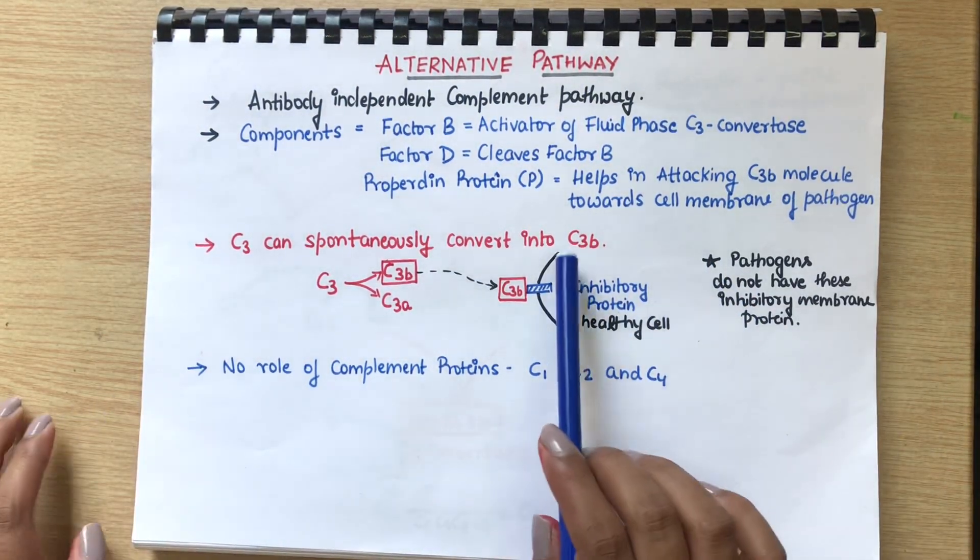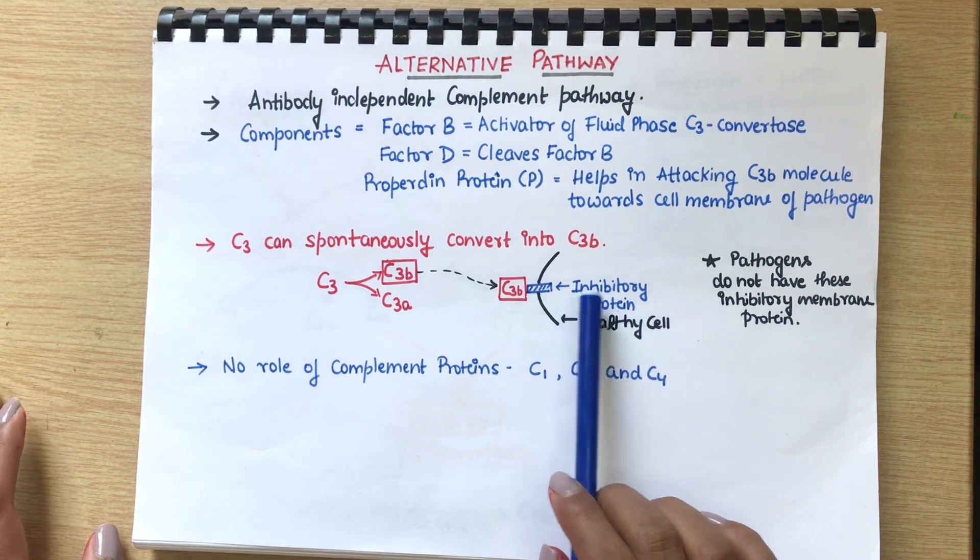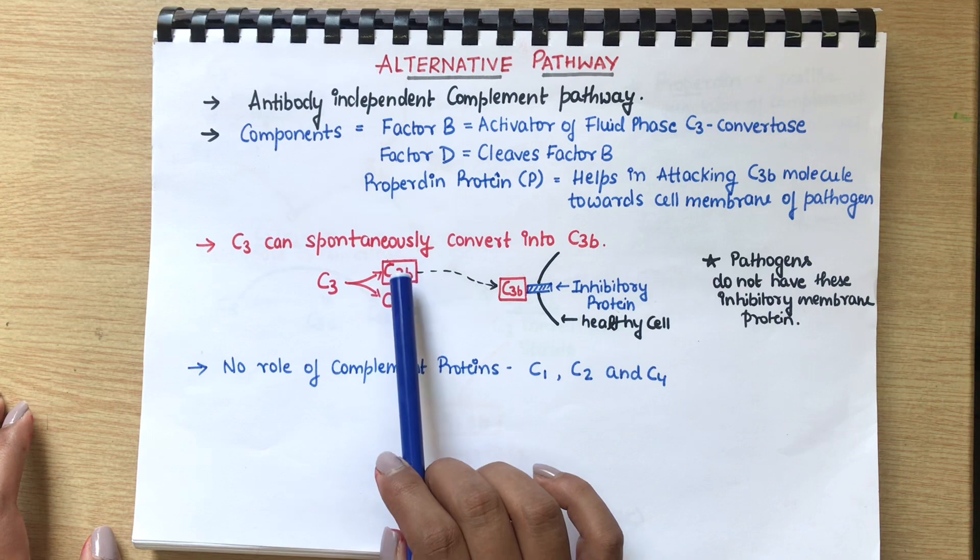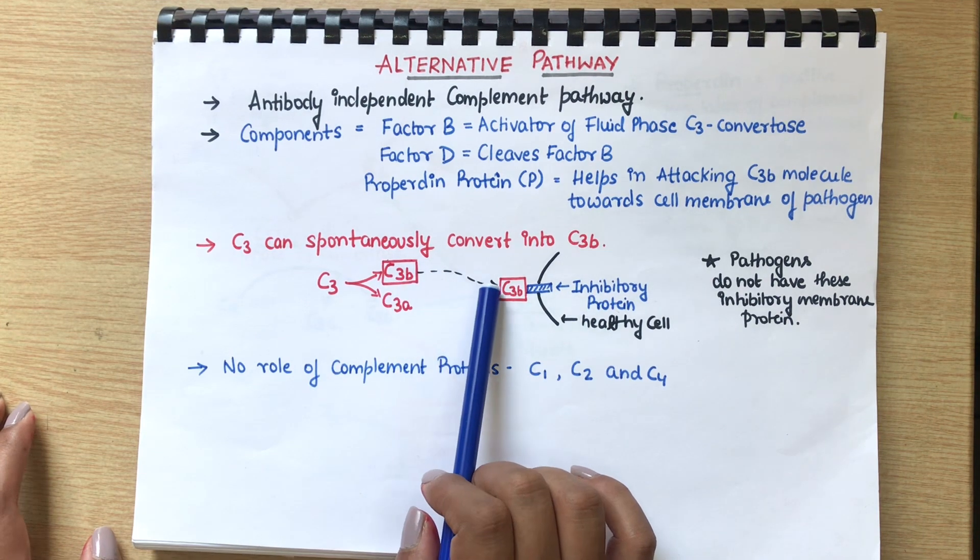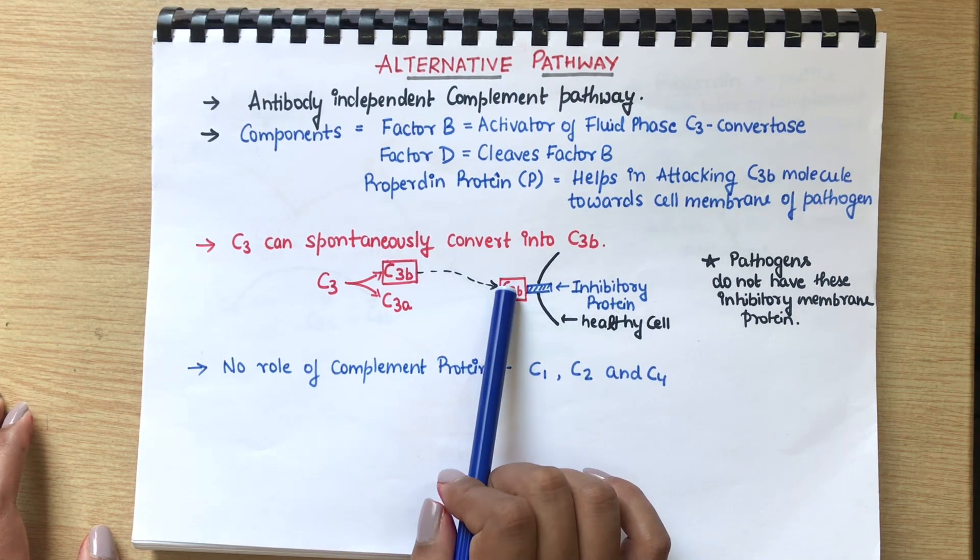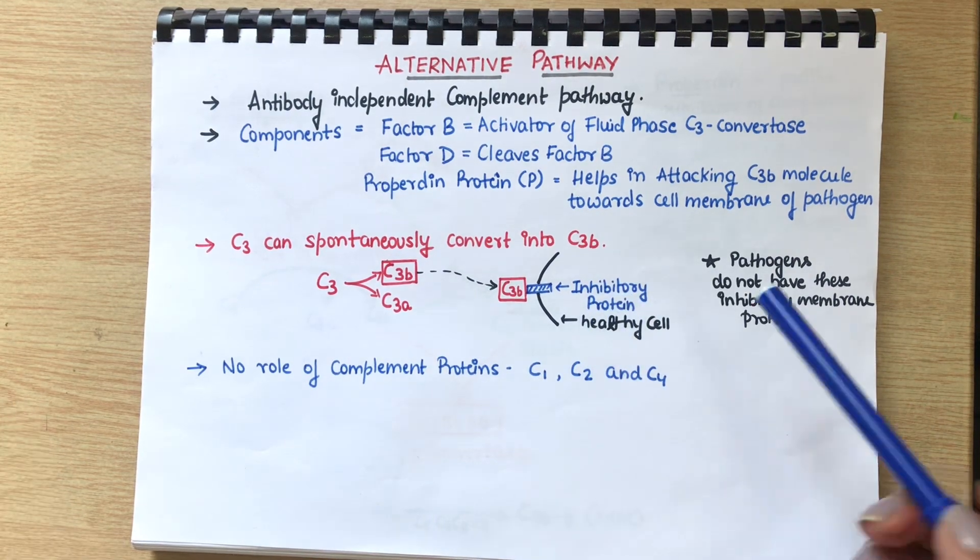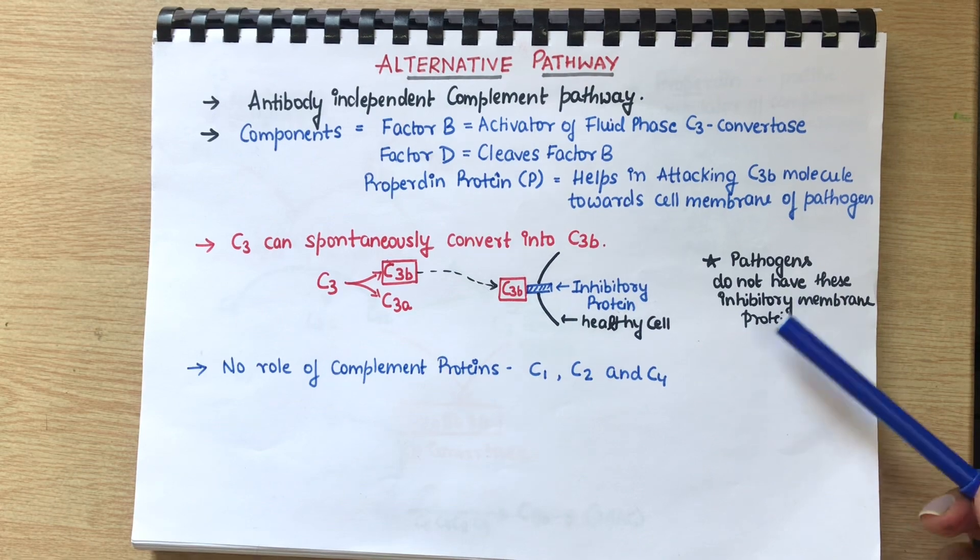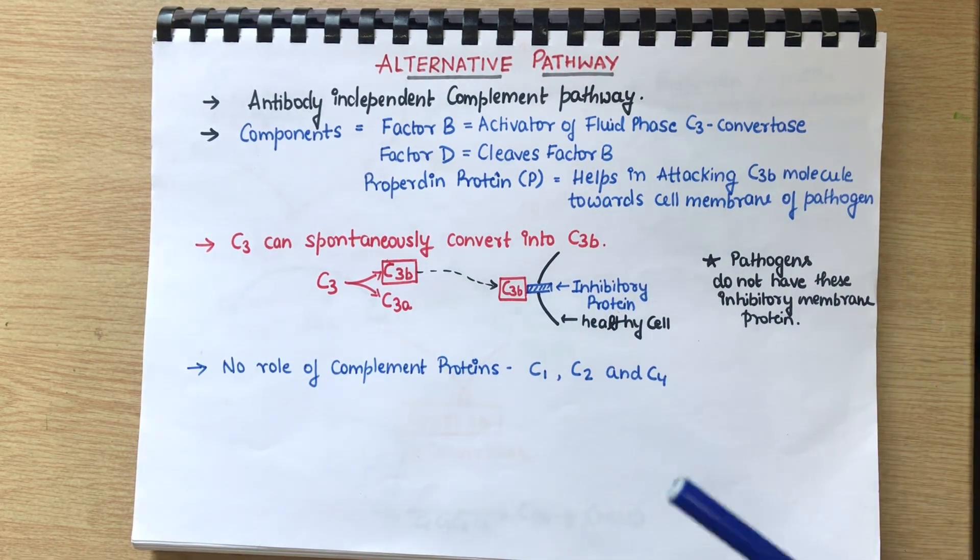But the case is, in healthy cells we have something called inhibitory proteins. So when C3 is cleaved into C3a and C3b, the activated C3b will be inhibited by the inhibitory protein. But in pathogens like bacteria, we don't have these inhibitory membrane proteins, so the pathway will continue.